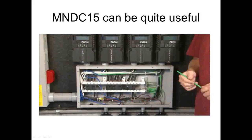We can do up to 15 breakers here — you've got an input breaker and an output breaker for each Classic. With the 150-volt Classic using single-pole breakers, you could actually do seven and a half Classics. With the higher-voltage Classic needing a two-pole breaker on the input and a single pole on the output, you can do five Classics in this one box. These are pretty cheap.